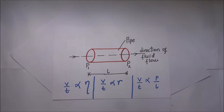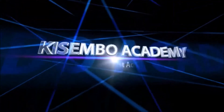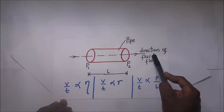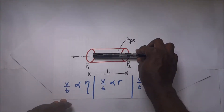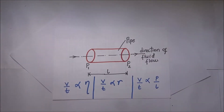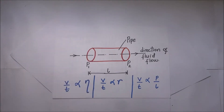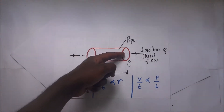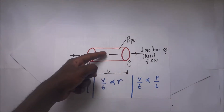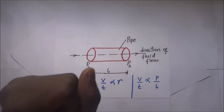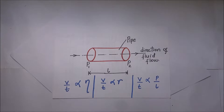Poiseuille's formula for fluid flow. If a liquid is flowing at steady flow in a tube, the volume of the liquid that is flowing out per second is going to be affected by three things.